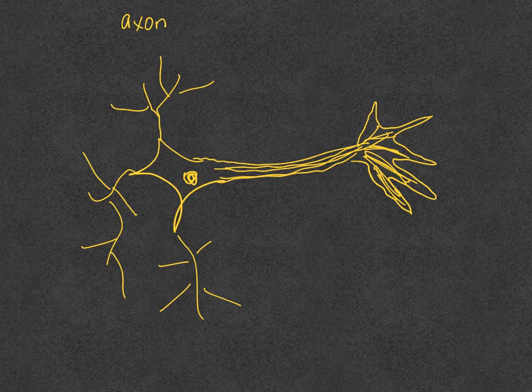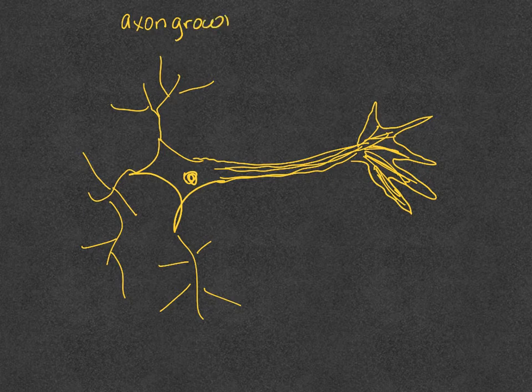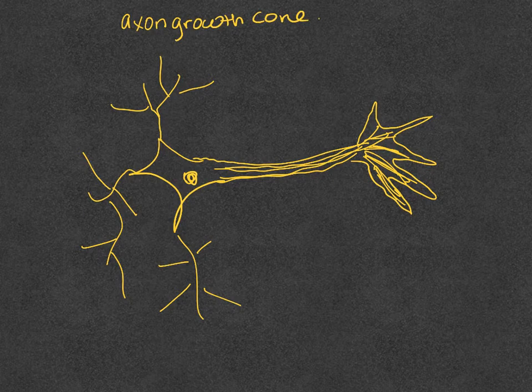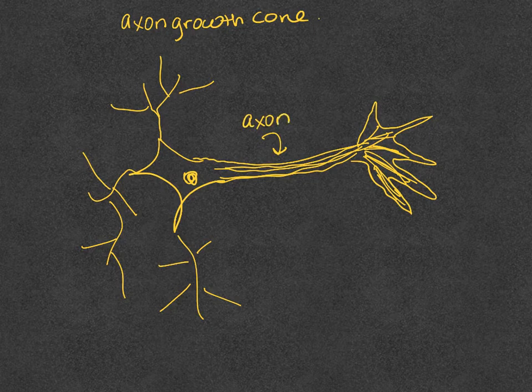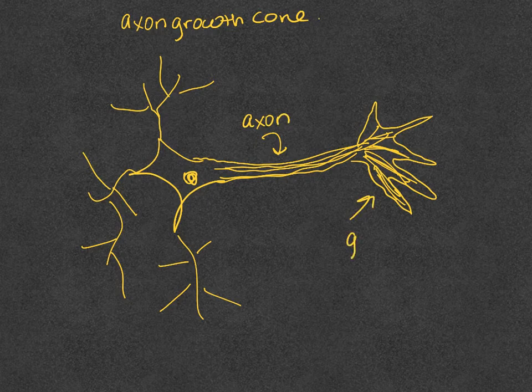So here I'm going to talk a little bit about the axon growth cone. And here we have a neuronal cell. This is the axon. And this right here is the growth cone.